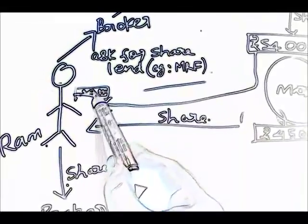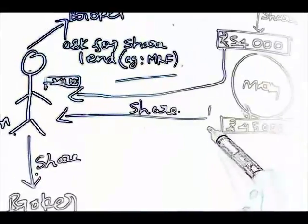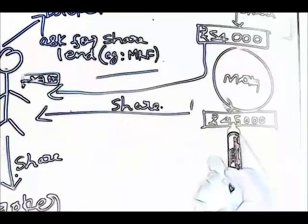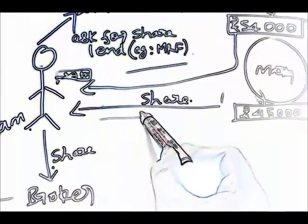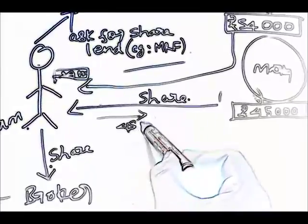So now with that 54,000, he buys the share at the rate of 45,000. So now he spends 45,000 for buying the share.